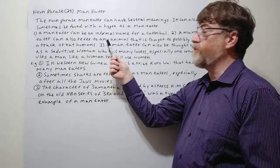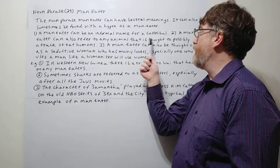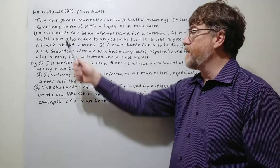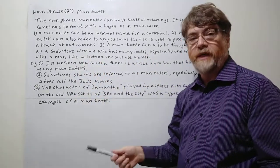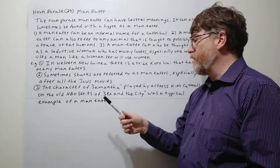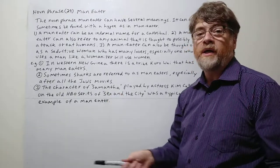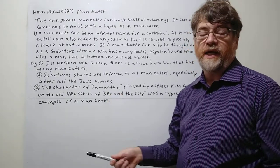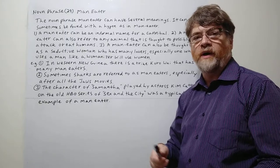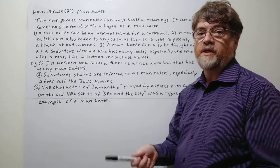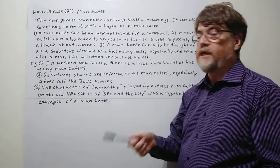A man-eater can also refer to any animal that is thought to possibly attack or eat humans. An example here, of course, would be shark, but it could be a tiger, it could be a lion, any ones that have kind of known that in the past they may have done it sometimes. It could be referred to as a man-eater.